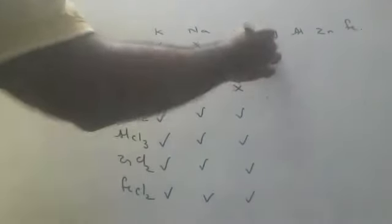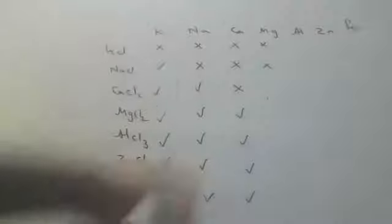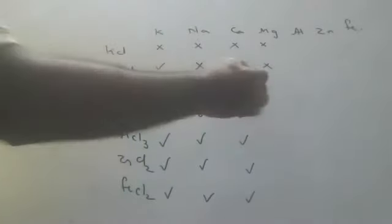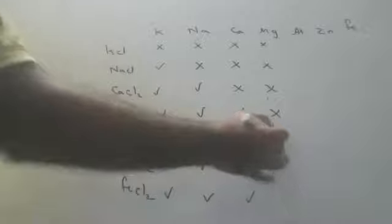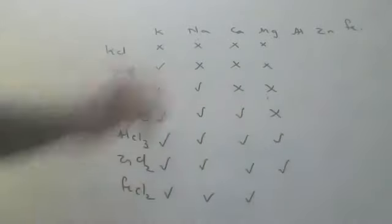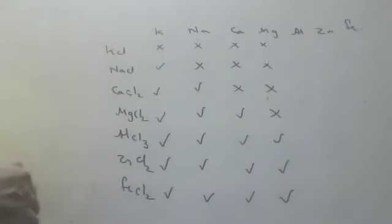Next, magnesium. With potassium — it can't, because magnesium is below potassium. With sodium — it can't, because it is below sodium. With calcium — it can't. With magnesium itself — no. But with aluminium — yes, it can displace aluminium because it is above aluminium. With zinc — yes. With iron — yes, because magnesium is above iron.